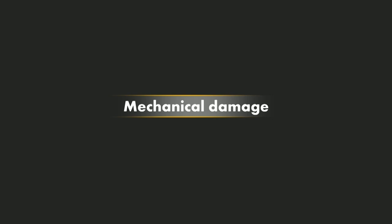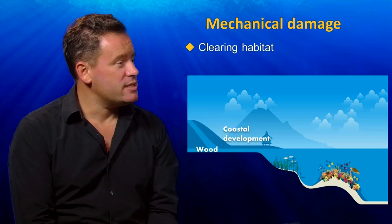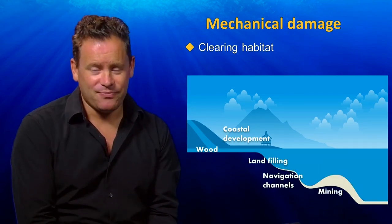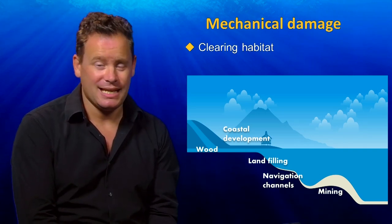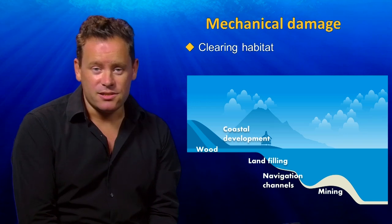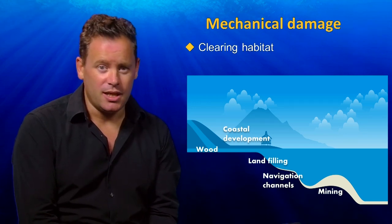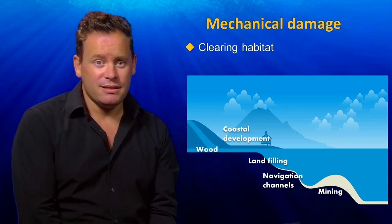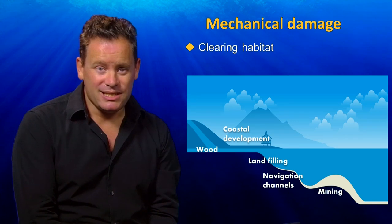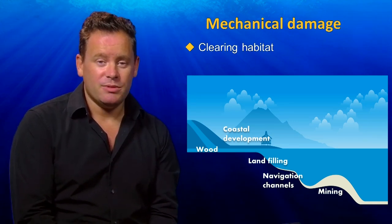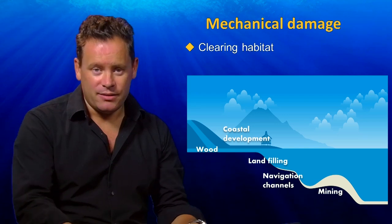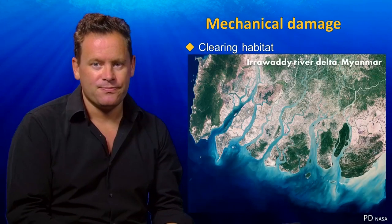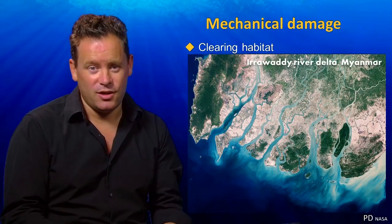Starting with mechanical damage — one of the major causes is humans' preoccupation with clearing habitat, and we do this for a variety of reasons. We clear coastal areas to build houses, resorts, and coastal infrastructure like ports. Sometimes we want to clear mangroves to provide building materials, or we might dredge the seabed to create new sediment and reclaim land from the sea.